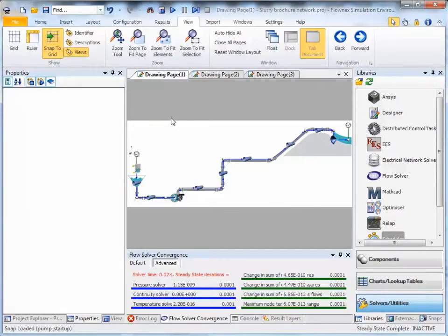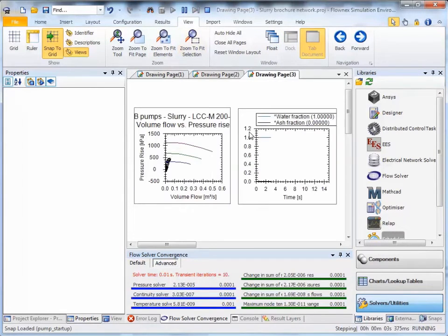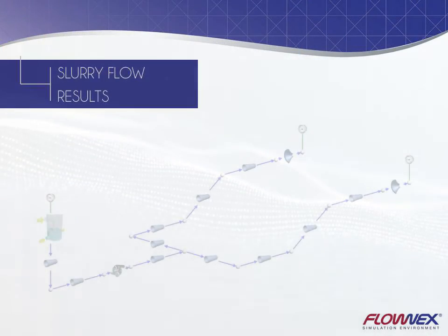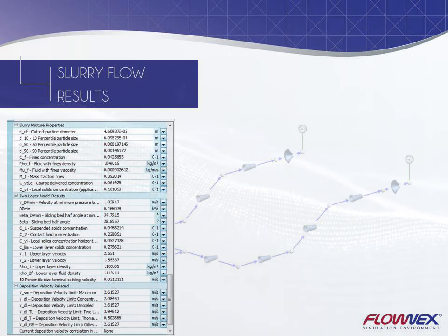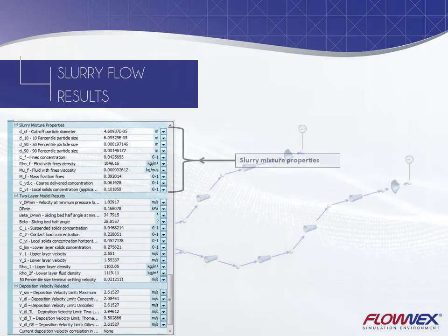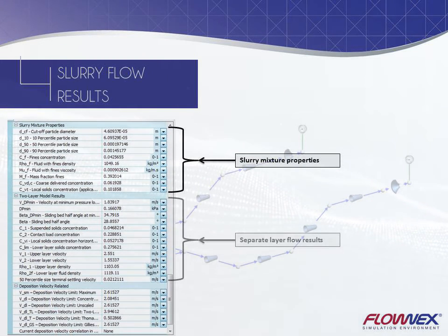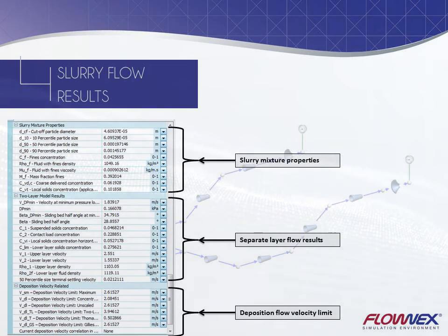Modelling can be done in either steady state or transient, in which real-time plant performance can be monitored and analysed. The results specific to slurry applications in Flonex include the slurry mixture properties, the flow results of the separate layers and the deposition velocity limit of various theoretic models.